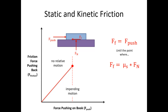Mu static is the static coefficient of friction, which depends on the nature of the surfaces in contact. A book on a table is somewhere in the middle. Something slippery like a hockey puck on ice has a very small static coefficient of friction, while rubber on asphalt is purposely much larger — it's much harder to slide those two things relative to one another. The point of impending motion is the point at which the object is about to slip but has not yet.